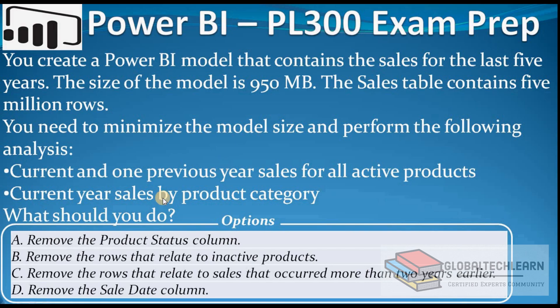First analysis: current and one previous year sales for all active products. Second analysis: current year sales by product category. What should you do? There are 4 options: remove the product status column, remove the rows that relate to inactive products, remove the rows that relate to sales that occurred more than 2 years earlier, or remove the sales date column.